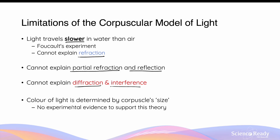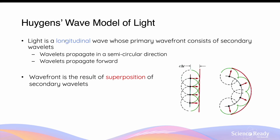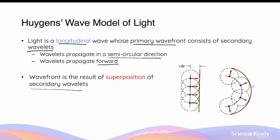Christian Huygens was a Dutch physicist who proposed that light is a longitudinal wave whose primary wavefronts consist of secondary wavelets. Each wavelet propagates in a semicircular direction and in a forward manner. Huygens explained that the wavefronts we see in longitudinal waves are a result of superposition between the secondary wavelets. If the wavelets propagate in a semicircular direction in the same direction, they will superimpose and generate a straight wavefront. If the wavelets were propagating outwards in different directions, the result of superposition will be a curved wavefront.